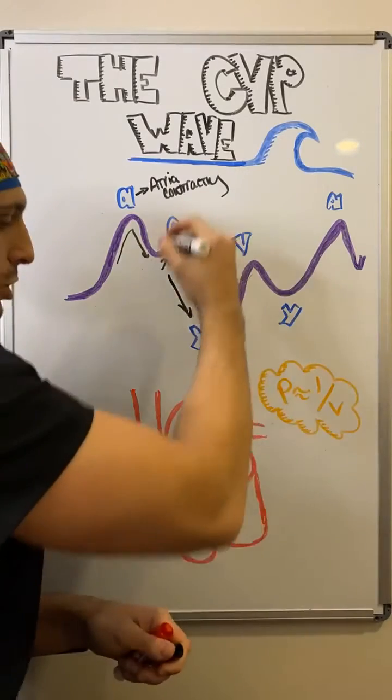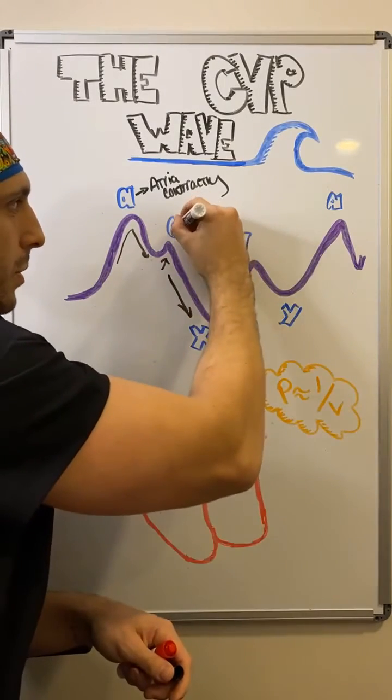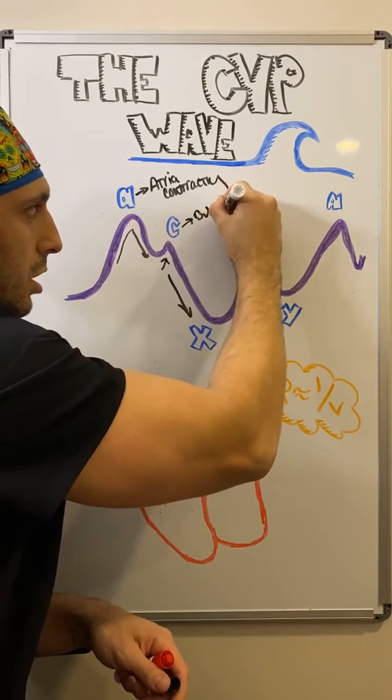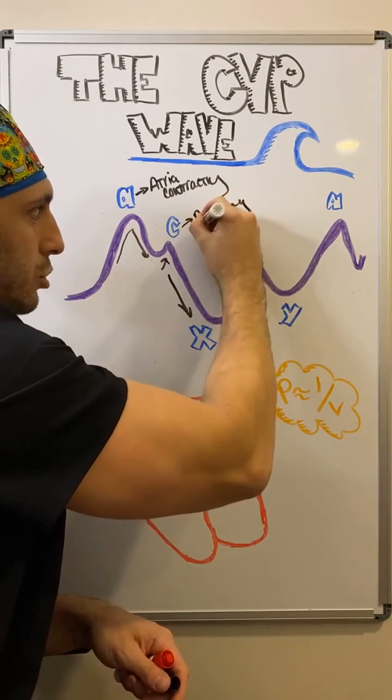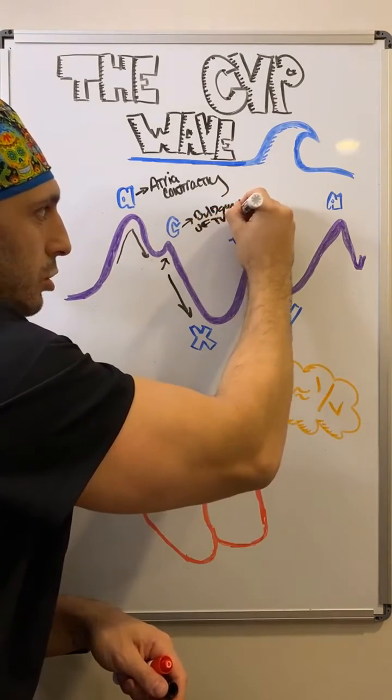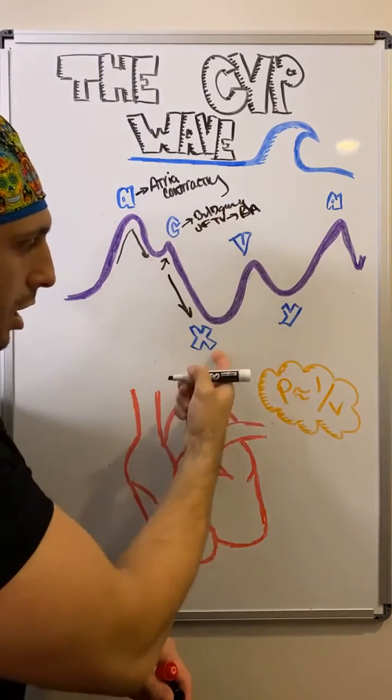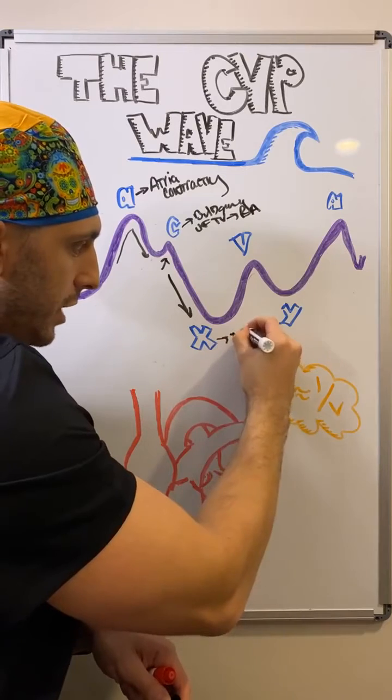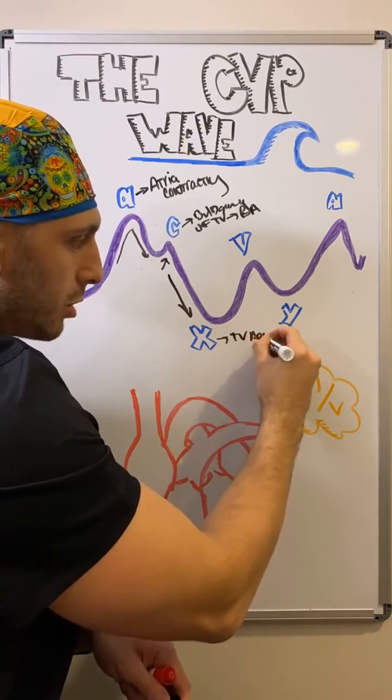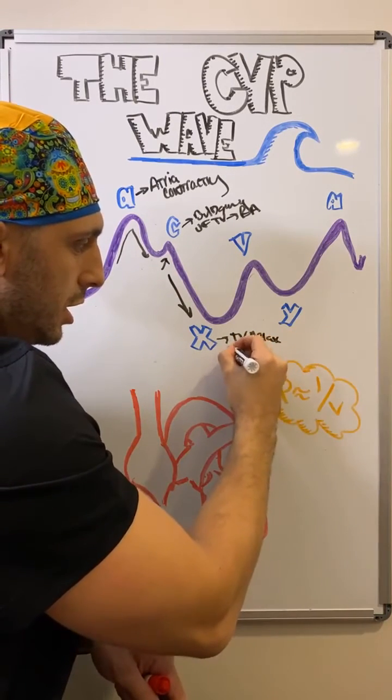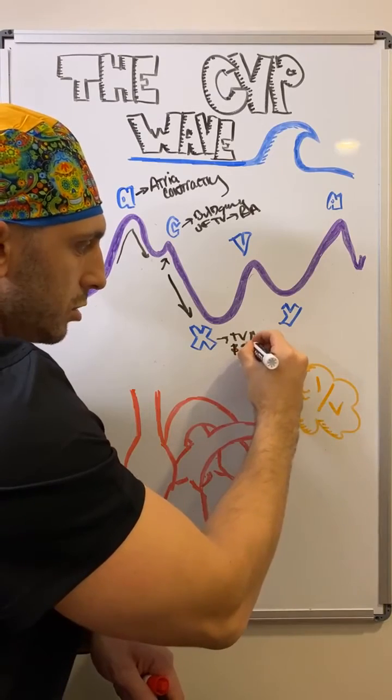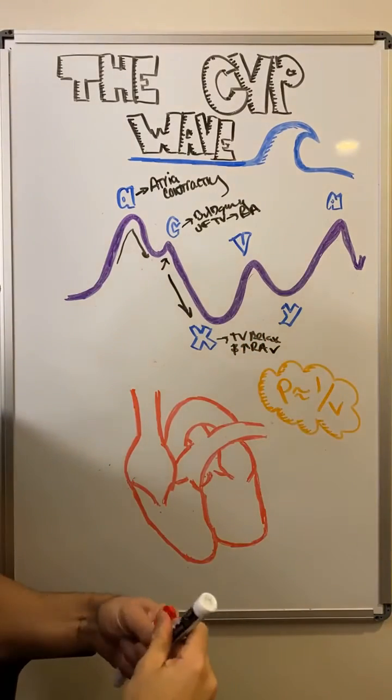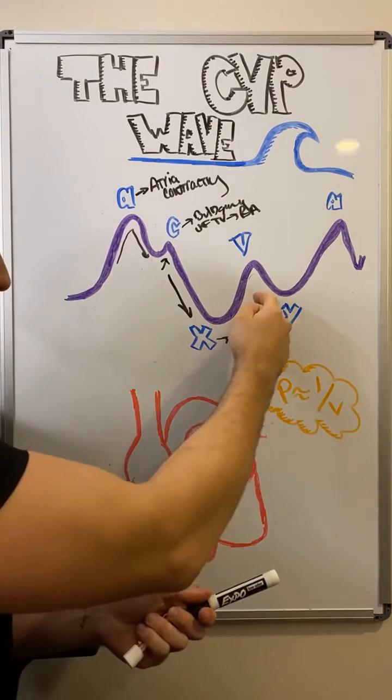Next step. I should probably write these in. So our C was the bulging of tricuspid valve into RA. And then our X descent is when the tricuspid valve and the atria relax and increase right atrial volume. So I hope this is making sense so far. And we have two more parts.